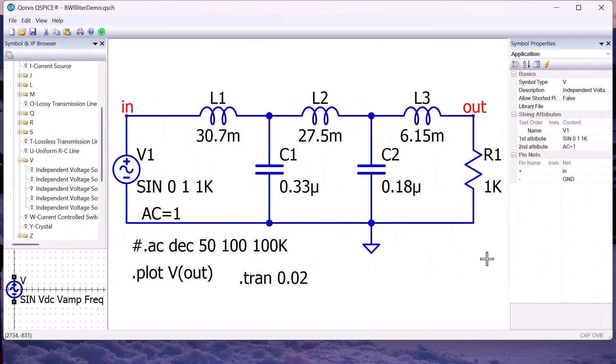The sine wave source is a time domain source. Small signal AC analysis does not require this time domain sine wave source. The small signal AC analysis can be done with a DC source. Let's try this.